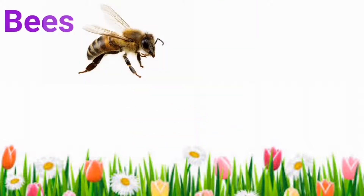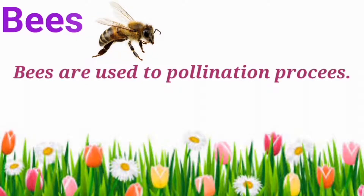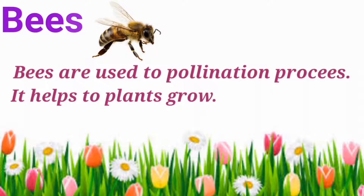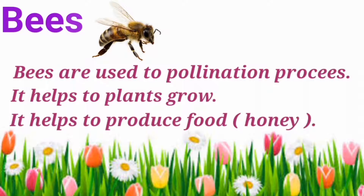What's the first one? Bees. Bees are used in the pollination process. It helps plants grow and it helps to produce food like honey.